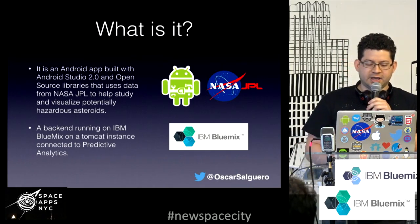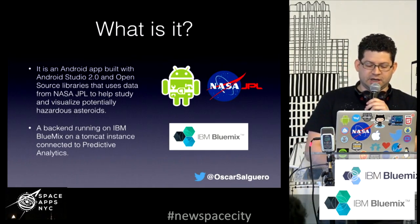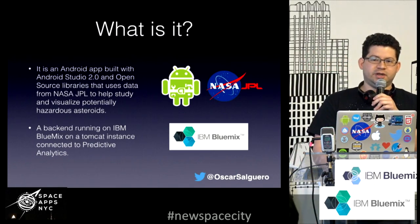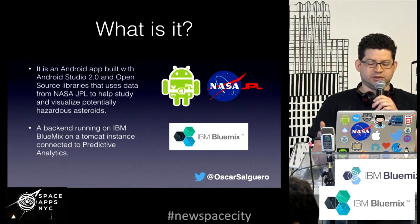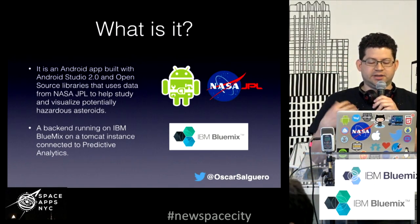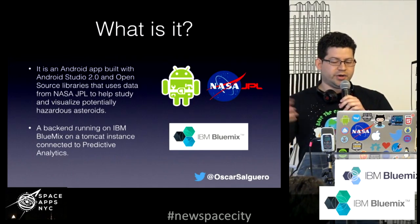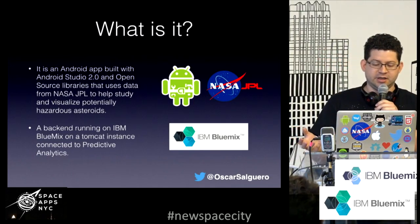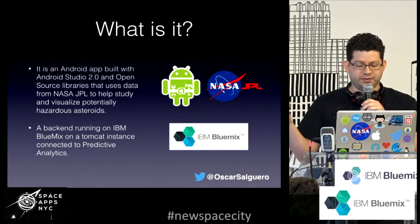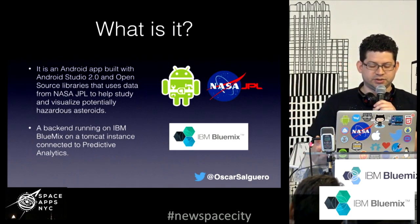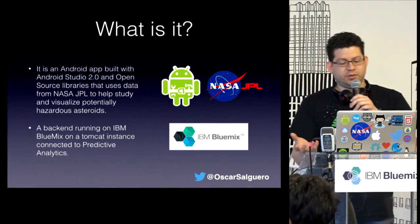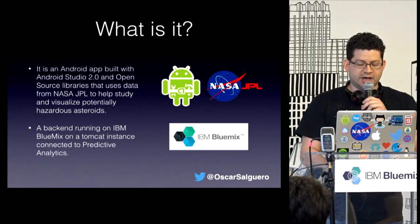I created a backend with IBM Lumix using a Tomcat server. I also connected it to predictive analytics, because my intention is that as we collect more and more files — the files are updated daily — we can create a history of the positions of the objects in the solar system, and then with predictive analytics we can predict future orbits.